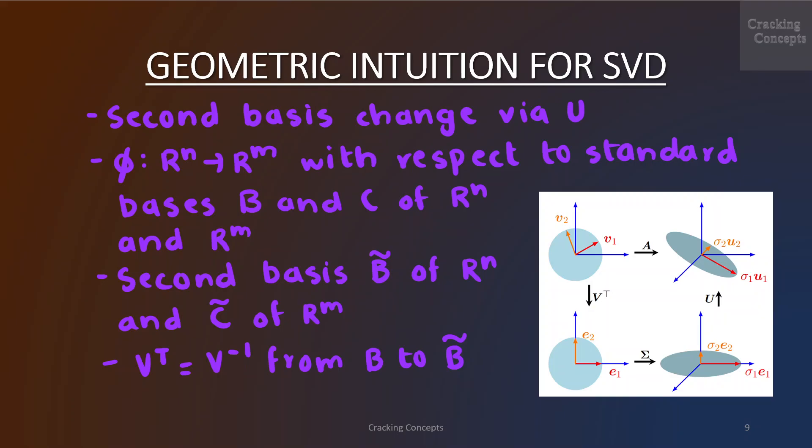So, let's take a look at the matrix of a linear mapping φ which is mapped from R^n to R^m with respect to the standard basis B and C of R^n and R^m respectively. Moreover, assume a second basis B tilde of R^n and C tilde of R^m.